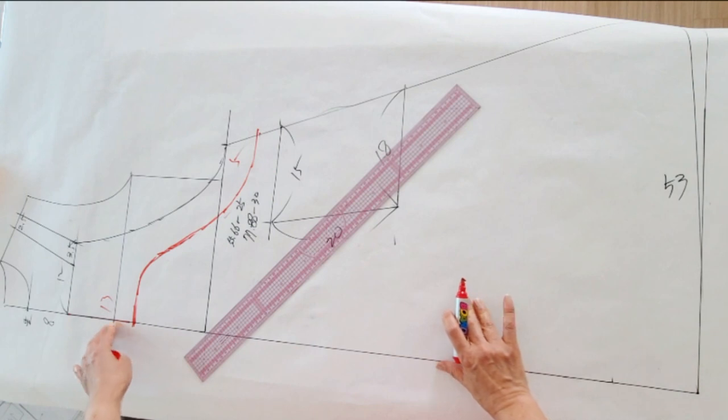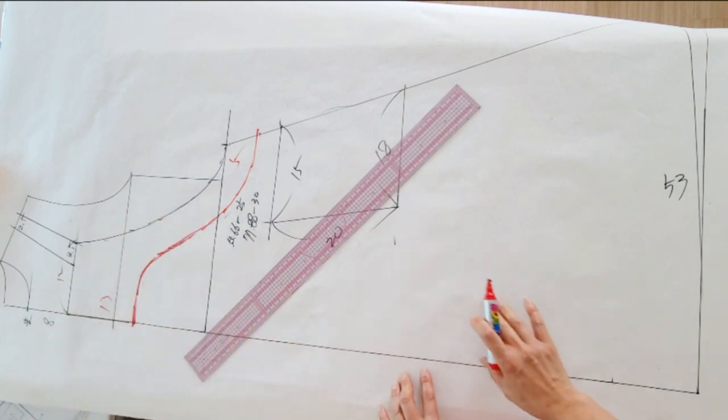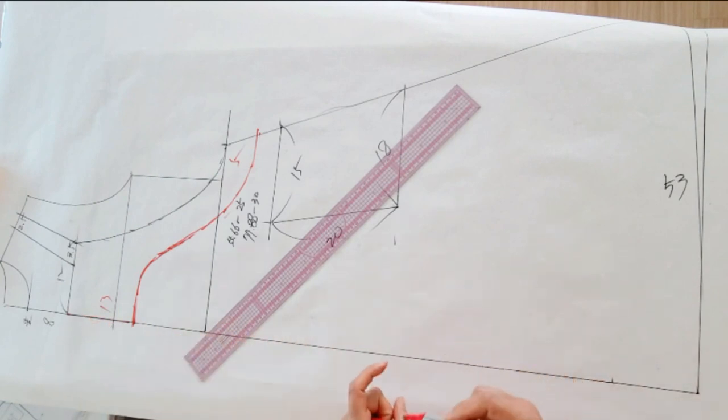This is the neck and armhole side of the front. The end of the front is designed to make the shape of the front.